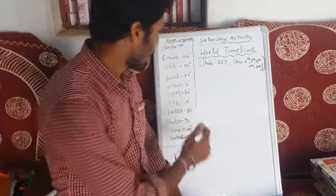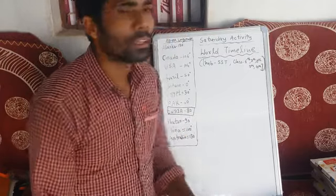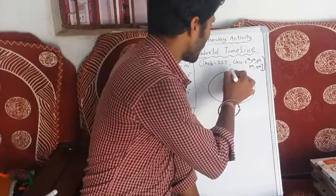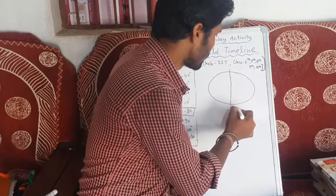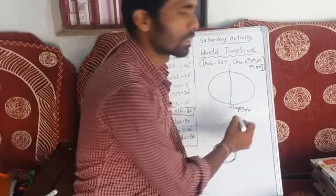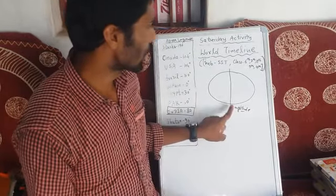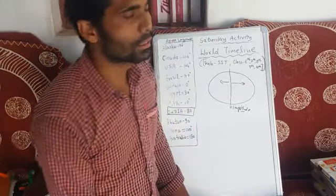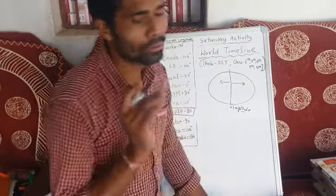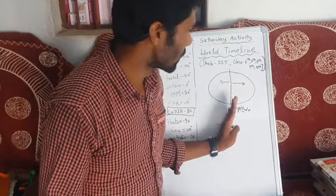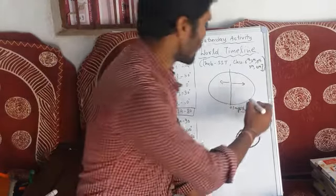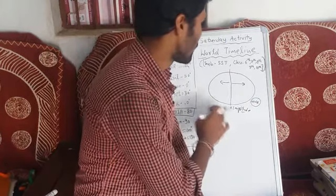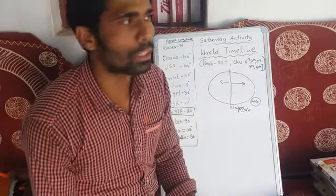Suppose we want to calculate the time of India. We can calculate India's time based on the zero degree longitude. This is our world, and at this center point the zero degree longitude passes. We can calculate the exact time based on these longitudes. Some countries are located on this side and some on the other side of zero degree longitude.